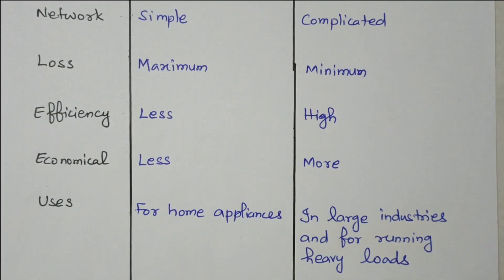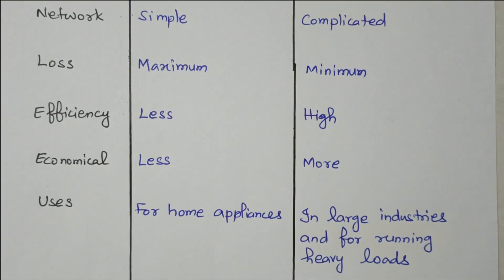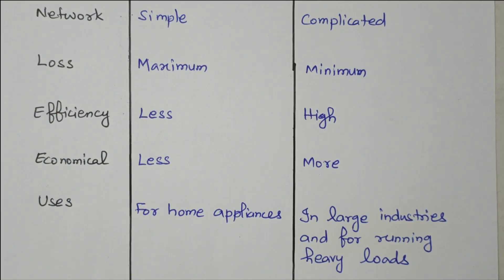In this video, we discussed the comparison of single-phase and three-phase AC systems. Single-phase has two conductors — phase and neutral — and is used for home appliances. Three-phase has four wires — R, Y, B, and neutral — and is normally used for industrial applications to run heavy loads. Subscribe the channel for more videos and notifications. A soft copy of this material is available in the drive; the link is given in the description box. Thank you for listening.